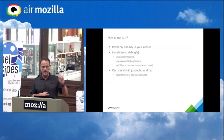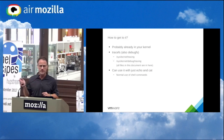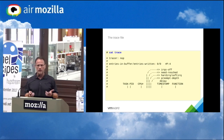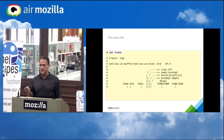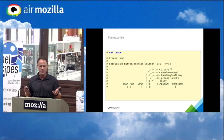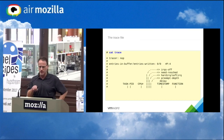All the slides assume you're in sys/kernel/tracing or sys/kernel/debug/tracing — just assume you've CD'd into that directory already. If you look at the trace file and just do cat trace, this is basically what you'll see. Pretty simple.